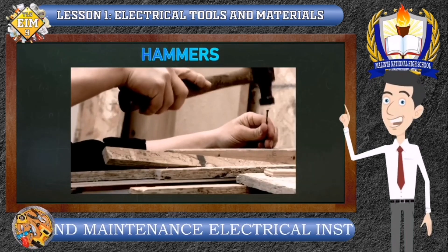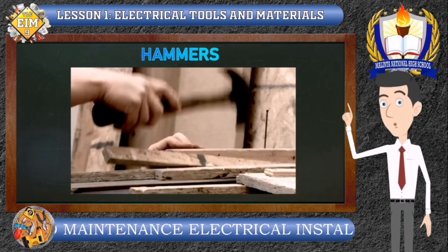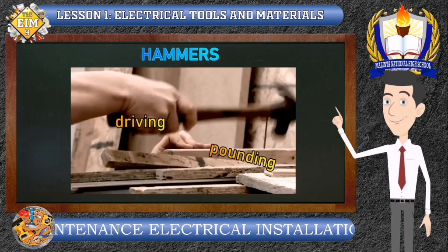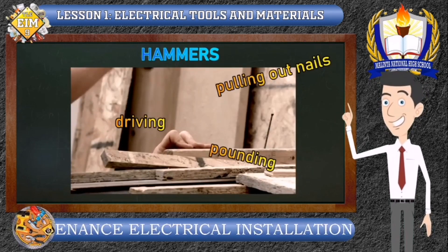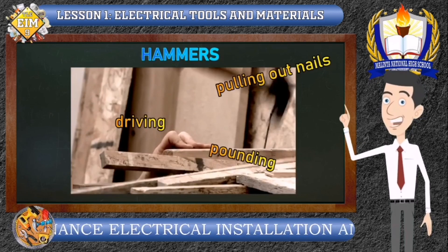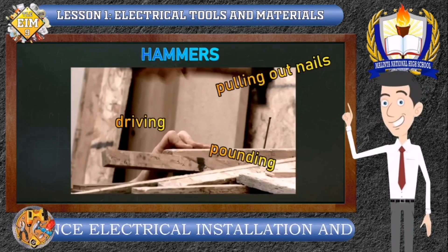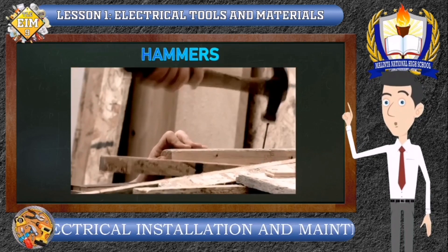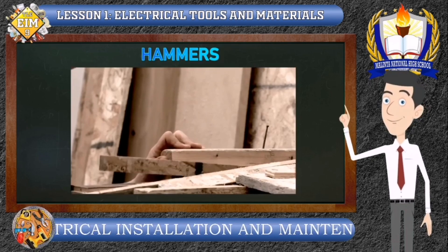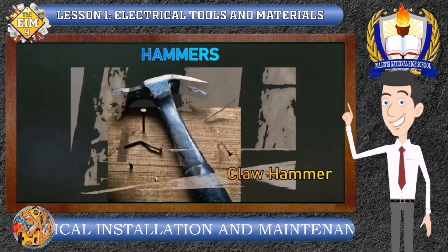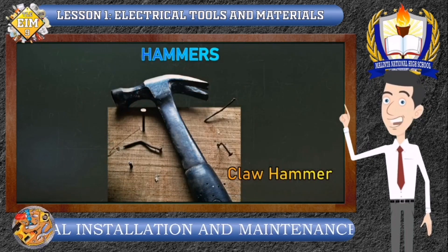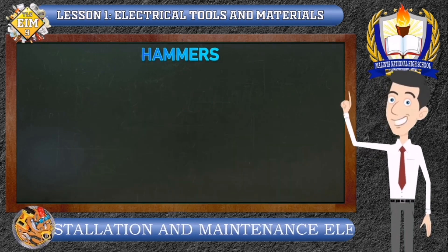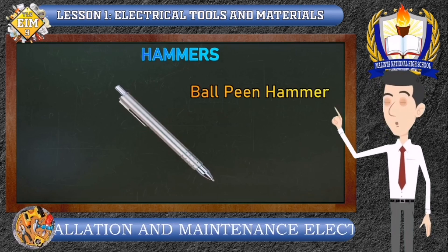Number 2: Hammers. These are tools used in driving, pounding, and pulling out nails. They are made of hard steel, wood, plastic, or rubber. Types of hammer are: claw hammer, rubber mallet, and ball-peen hammer.